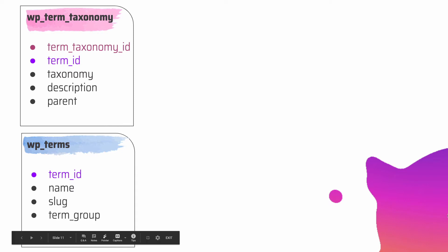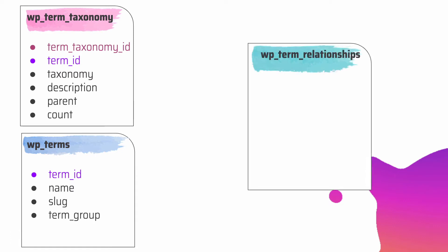The WP_term_taxonomy table contains the term_taxonomy_id, which is a unique ID for the term-plus-taxonomy pair. It also has the term_id referencing the term in the WP_terms table, and a taxonomy field that designates which taxonomy the term resides in — with defaults being category, link_category, and post_tag. It also contains a description, a parent field that tracks hierarchical relationships, and a count field that tracks how many objects are associated with the term-taxonomy pair.